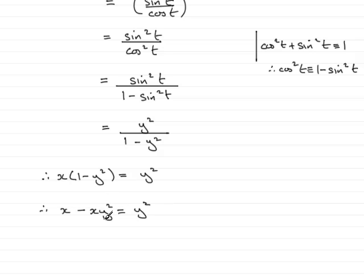Add xy² to both sides, and we get x = y² + xy². Now factorize the right side by pulling out y² as a common factor: x = y²(1 + x).